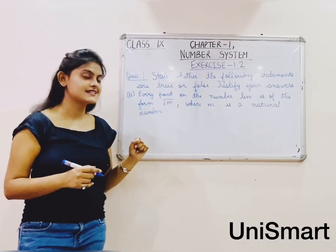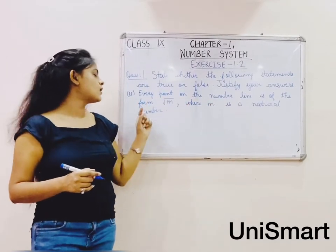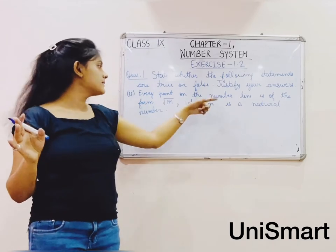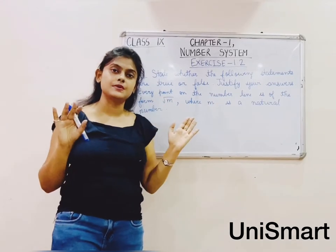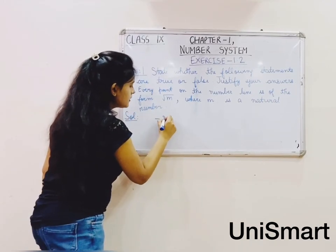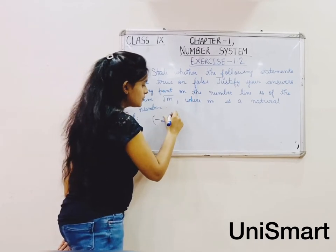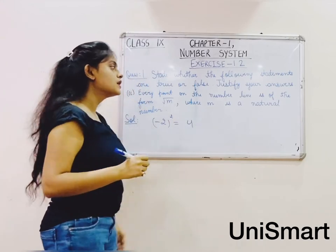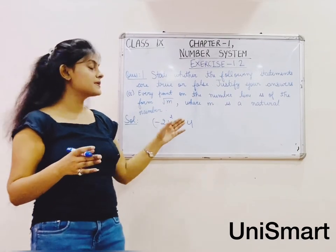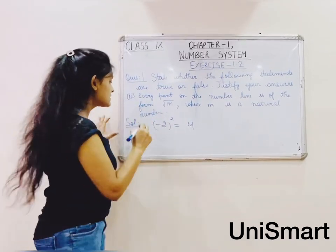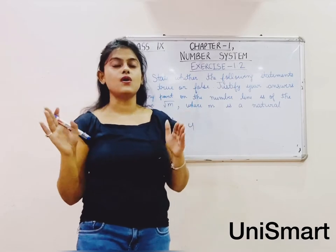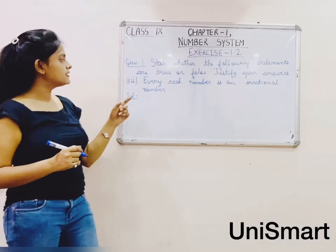Second part: every point on the number line is of the form root m, where m is a natural number. Suppose we have a negative number like minus 2. If I find the square root, the result under the radical would need to be positive, but no negative integer can be a square root of any natural number. So this condition is FALSE.